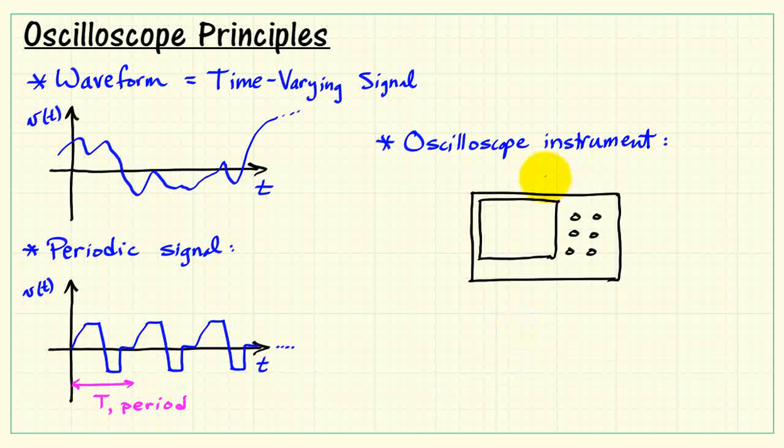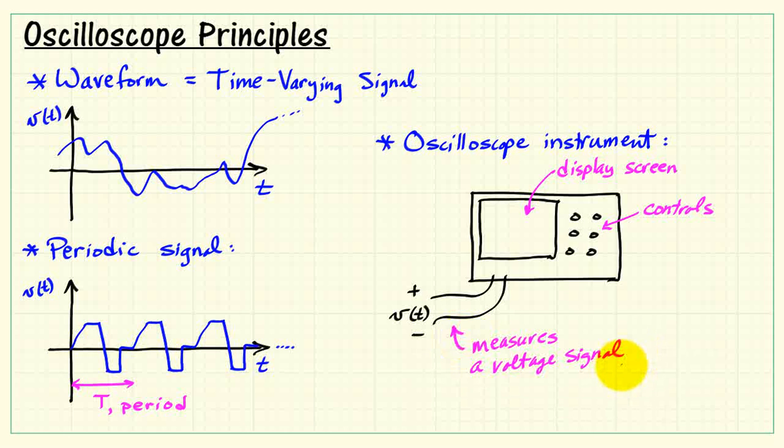The oscilloscope instrument has a very prominent display. It has a series of controls that you can use to manipulate the display, and it has a way of getting the voltage signal into the instrument. These pair of wires can be used to measure the voltage signal, V(t).